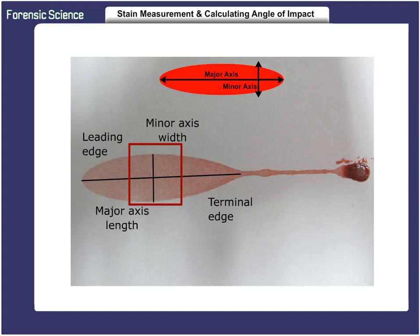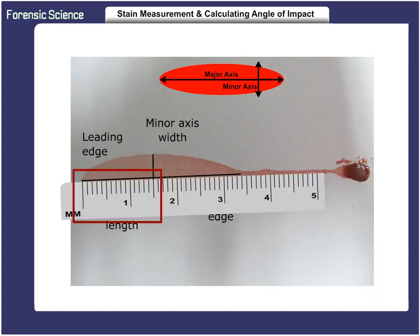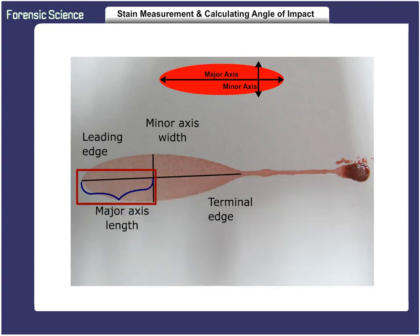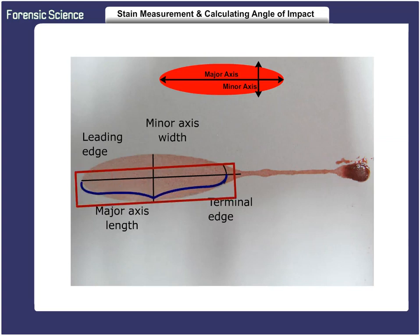To form the ellipse, we must measure the distance from the center of the widest point — the minor axis — of the stain back toward the leading edge of the stain. This value is then doubled to arrive at the overall length of the undistorted stain. The two halves would be approximately equal to each other.